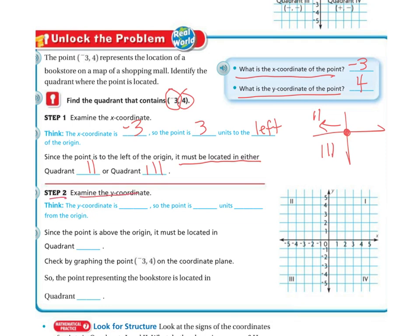Step 2: examine the y-coordinate. The y-coordinate is 4, so the point is 4 units up from the origin, because it's positive. Since the point is above the origin, it must be located in the second quadrant, which is this one right here.